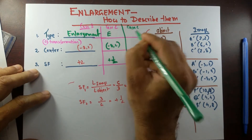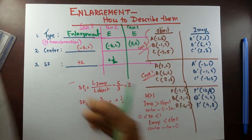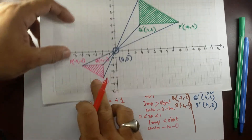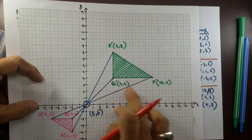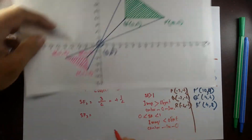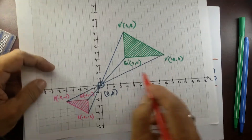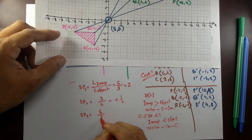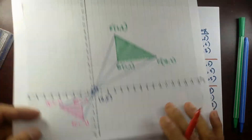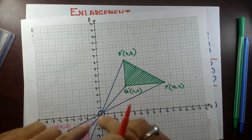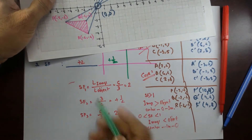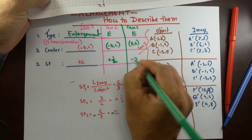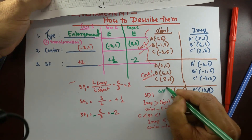Case 3: enlargement, center (0, 0). For the scale factor, counting PQ on the image side gives 6, and the corresponding object side PQ gives 3, so 6 ÷ 3 = 2. But since the triangles are facing the other way around and the center is in between the object and image, we put a negative sign. So the scale factor is negative 2 for Case 3.